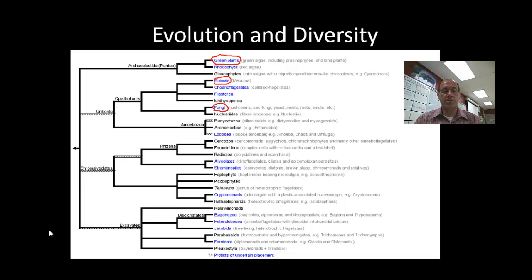And so we're going to talk about six of these supergroups. The six supergroups that we're going to talk about here include the Archaeplastida, which we'll talk about more in this one, the Unikonta, which includes animals and fungi, the Amoebozoa, the Rhizaria, the Chromalveolata, and then the Excavata. And so these are the six groups that we'll discuss through the course of our discussion of protists.